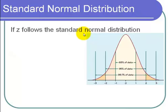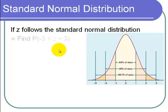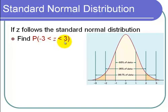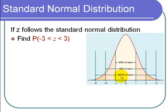The first question is: if z follows a standard normal distribution, find the probability that z is between negative 3 and 3. The probability that z is between two numbers is the area under the curve between those two numbers on the z-axis, and that is 99.7% or 0.997.